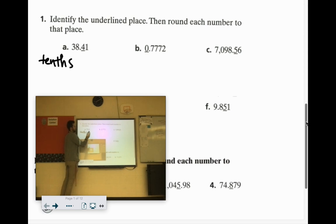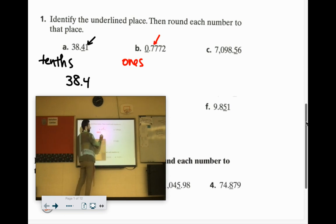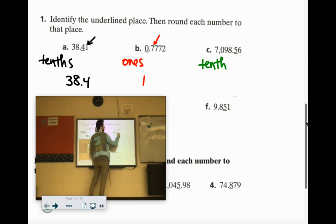And that would round. Look, it's a 1 after it. So you don't bump it up. It's still 38.4. 0.777. That is the ones place. And are you going to keep it 0 or are you going to bump it up? Look after it. It's a 5 or above. So you bump it up. So that would round to 1. This is in the tenths place. And behind it is a 6. So we bump it up. 7,098.6.